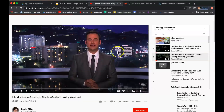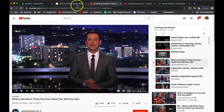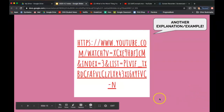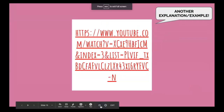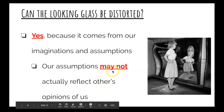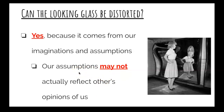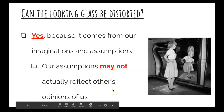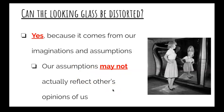Hopefully that example helps illustrate what the looking glass self process looks like. One important point is that your self-image could be distorted by using this process. Because you are assuming or trying to imagine how other people see you, the assumptions you make may not actually reflect other people's real opinions of you.